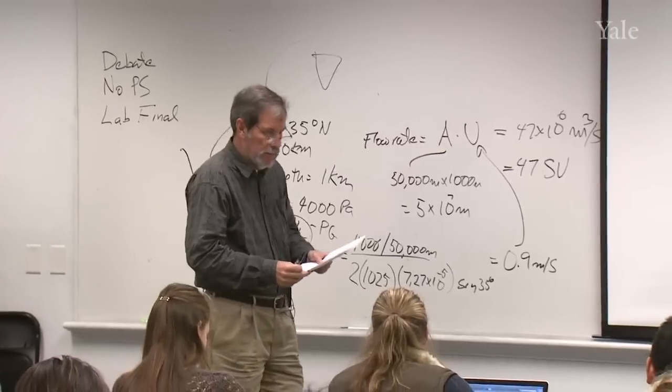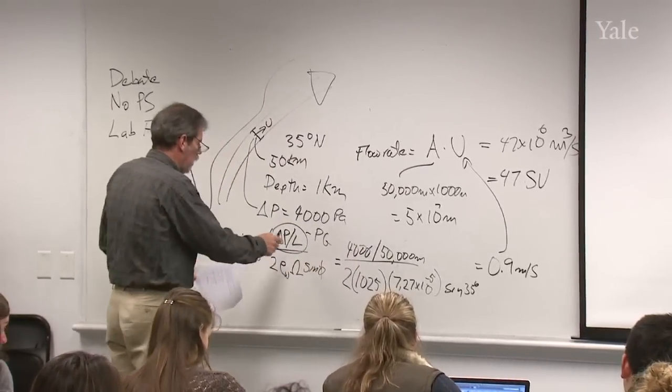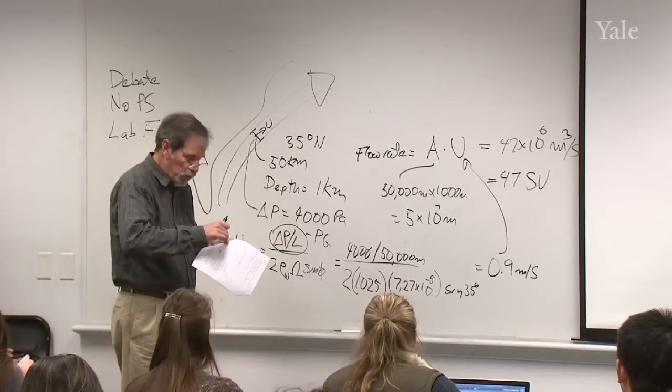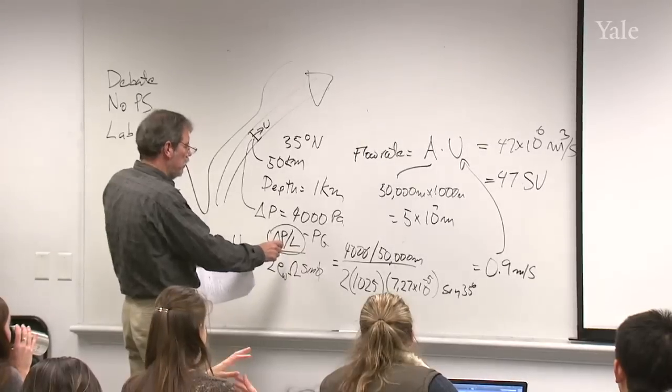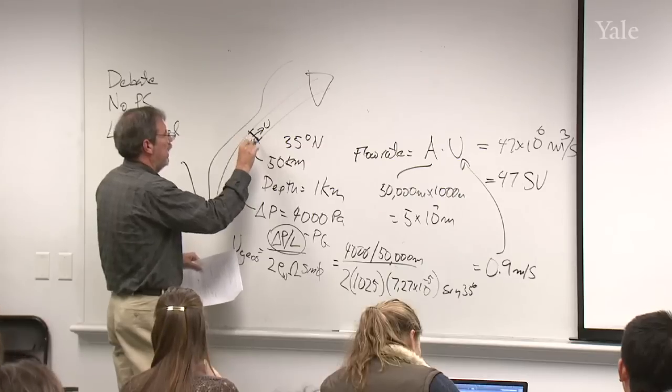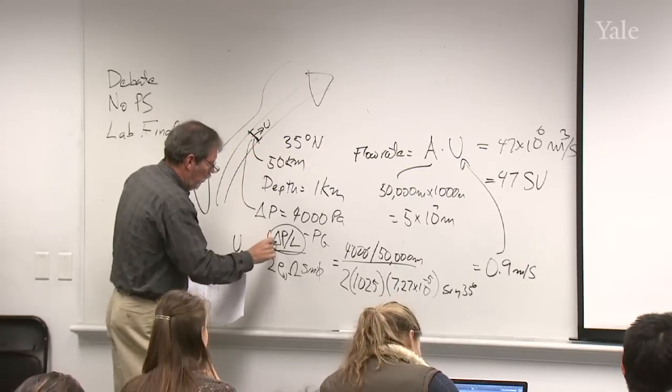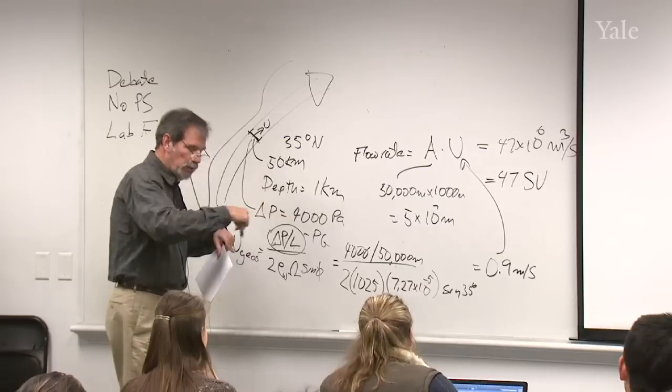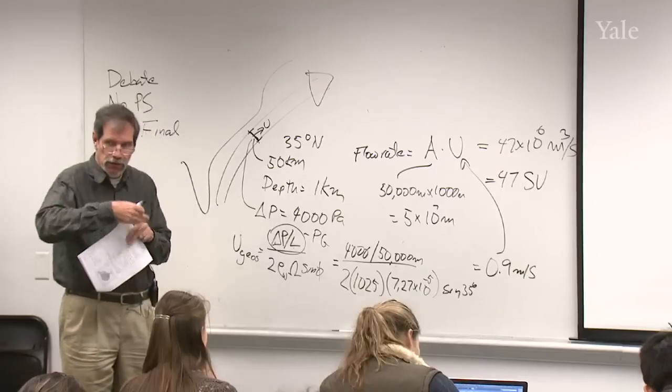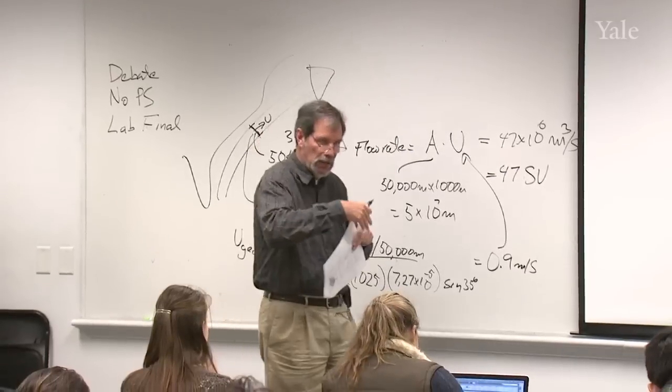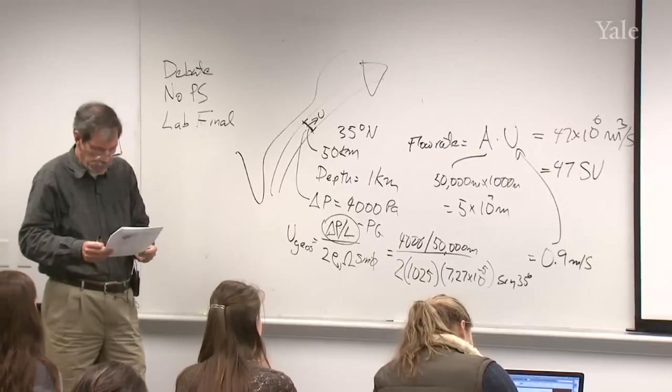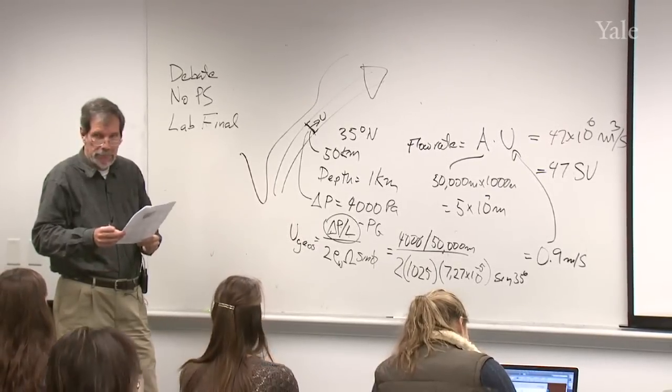So this is the pressure gradient, how pressure changes with distance. I gave you the pressure difference across the Gulf Stream. I gave you the width of the Gulf Stream. The pressure difference divided by that length over which the pressure changes is the pressure gradient. That has units of pascals per meter. How much does the pressure change per meter as you walk across or swim across the Gulf Stream?